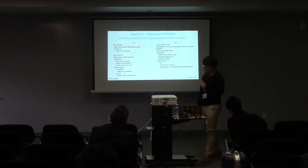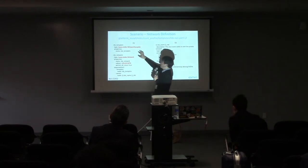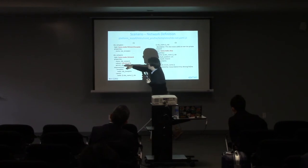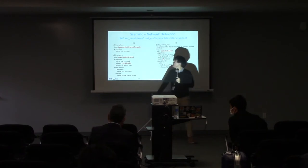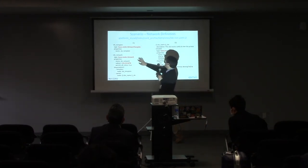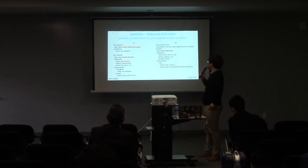Let's define the NBI network first — it is the same pattern as before. Define the network template, define the network with the correct IP address, and define the slice. Register both network template and slice in the requirements. Likewise for the SBI network: define network template, network with correct IP address, and slice, then register both network template and slice in the network's requirements section.